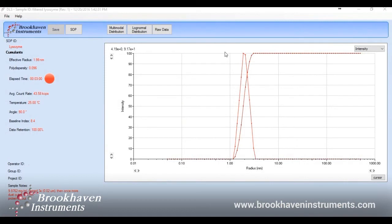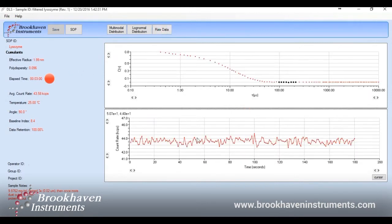The results for the freshly filtered sample without a dust filter setting on are much better than before filtering, but still have some evidence of larger particles as seen by the count rate history. The measured size is 1.99 nanometers.